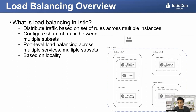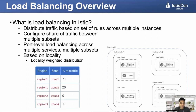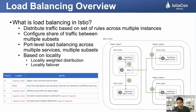I may also want to load balance traffic based on the locality of the service itself. If it's in the same region and same zone, I may want to prioritize that compared to a service running in a different zone or region. I can configure weight-based distribution for multi-region, multi-zonal environments. For example, if traffic is originating from region one zone one, I want 70% to remain in the same zone, 20% to go to another zone, and 10% to another region. There could also be a requirement for failover settings — if a service in a given zone goes down, where should traffic flow next?